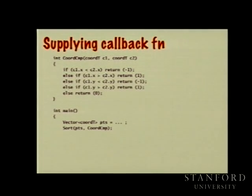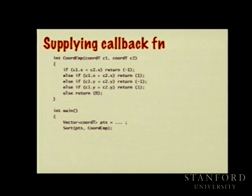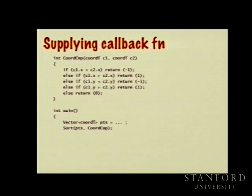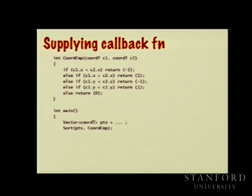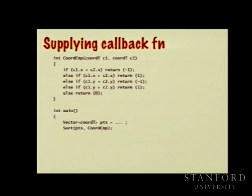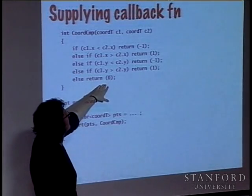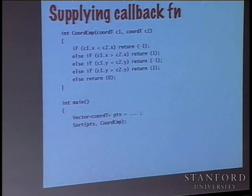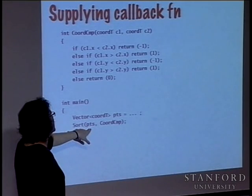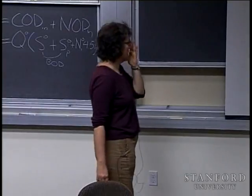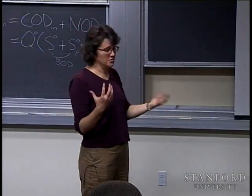A client could use this to sort coordinates — something with an x and a y field — by deciding to sort first on x: if the first coordinate's x precedes the other's, it's considered less than. Where x values are tied, use y to break ties. If both x and y are equal, the two elements are the same. Given a vector of coordinates, you invoke sort passing the vector and the matching comparison function, letting the sorting routine know how to order two coordinates.